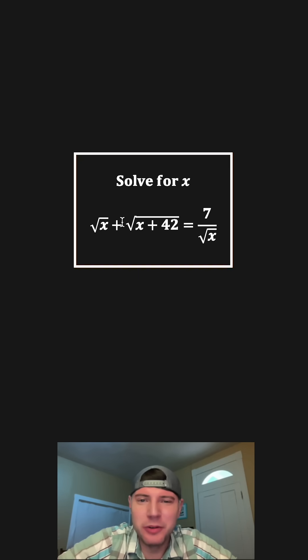Hey guys, this looks like a fun one. It says the square root of x plus the square root of the quantity x plus 42 equals 7 over the square root of x, and it wants us to solve for x.